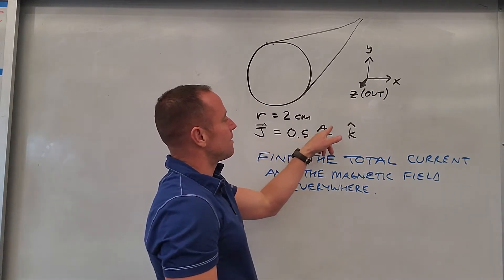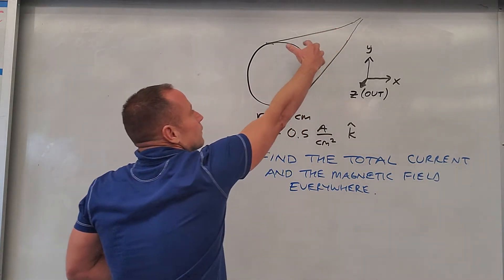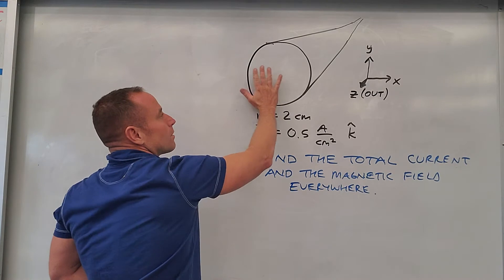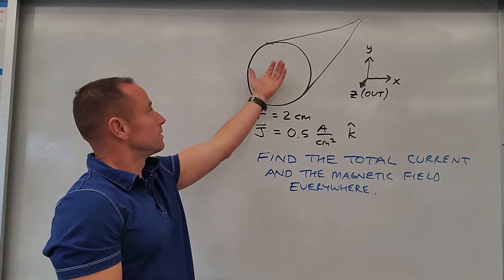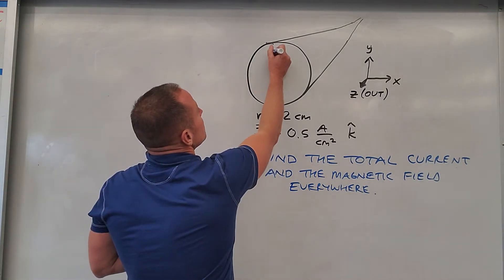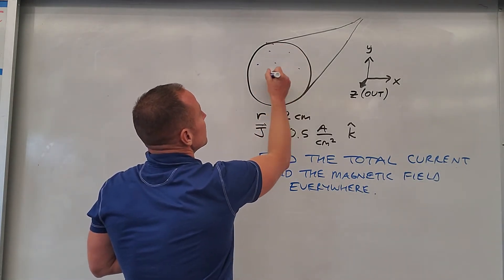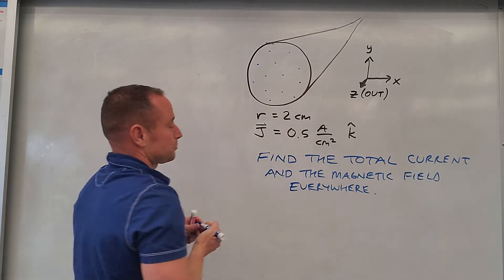it says it's 0.5 amps per centimeter squared. So what that means is there's current flowing through it, uniformly distributed throughout the area of the wire, coming out toward you everywhere. It's kind of evenly distributed and pointing right at your face, like out of this thing.